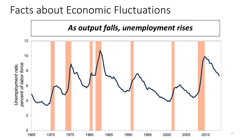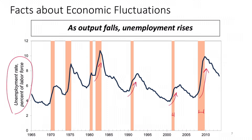Lastly, as output falls, unemployment rises. Here you can see the unemployment rate alongside those recessionary periods. During recessions, there is a huge increase in the unemployment rate. So when we are producing less and the economy is slowing down, this corresponds to higher levels of unemployment.